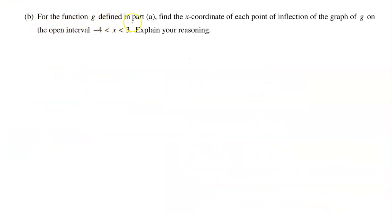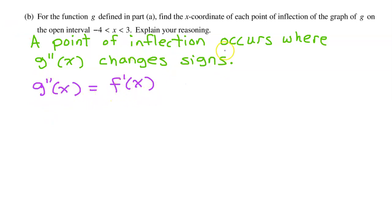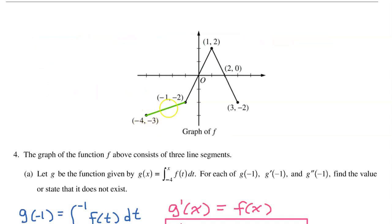Part B: For the function g defined in part A, find the x coordinate of each point of inflection of the graph of g on the open interval from negative 4 to 3. Explain your reasoning. A point of inflection occurs where g double prime changes signs. Since g double prime of x equals f prime of x, a point of inflection will occur where f prime changes signs — in other words, where the slope changes signs. Looking at the graph: the first segment is going uphill, positive slope; the next segment also uphill, still positive. Then it goes downhill — negative slope. So we have a point of inflection at x equals 1 because f prime changes from positive to negative.